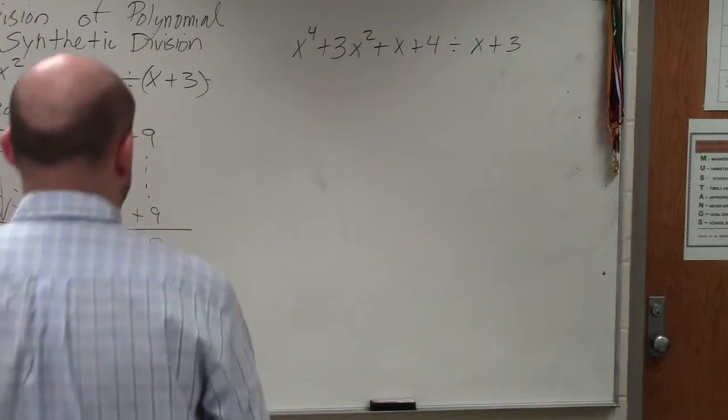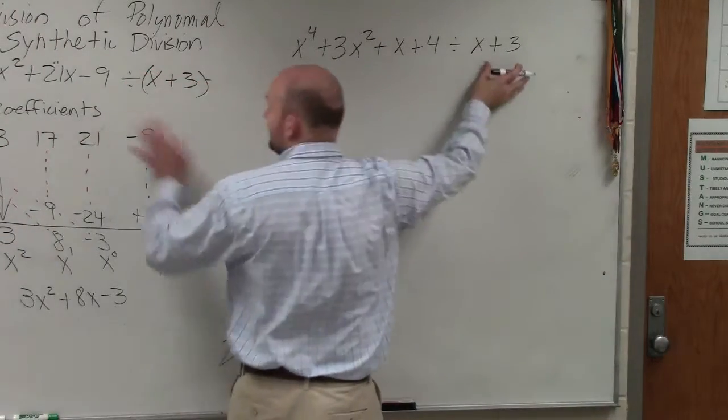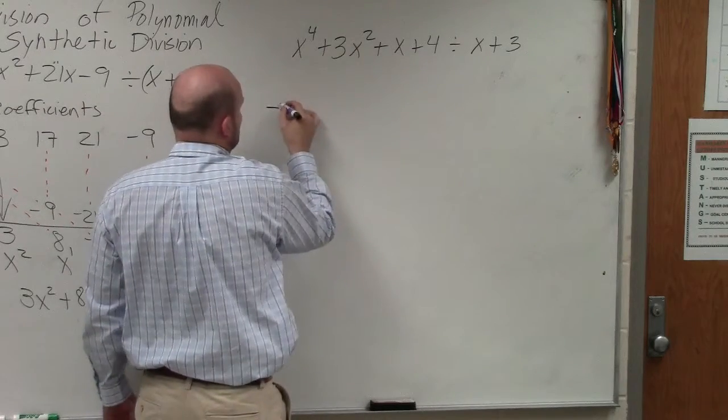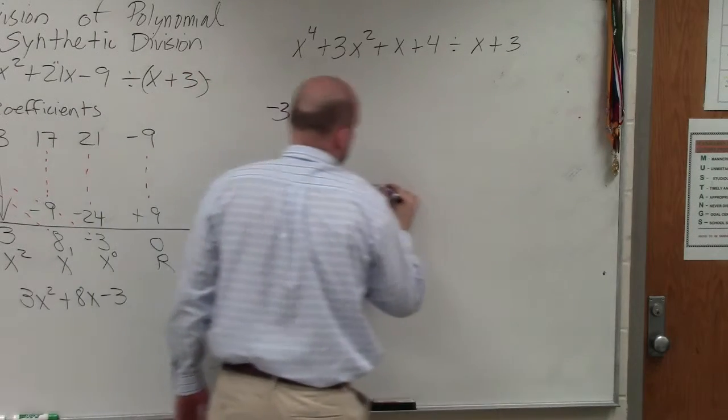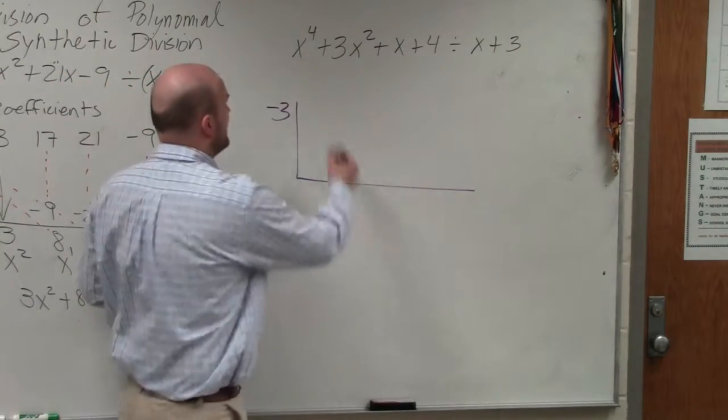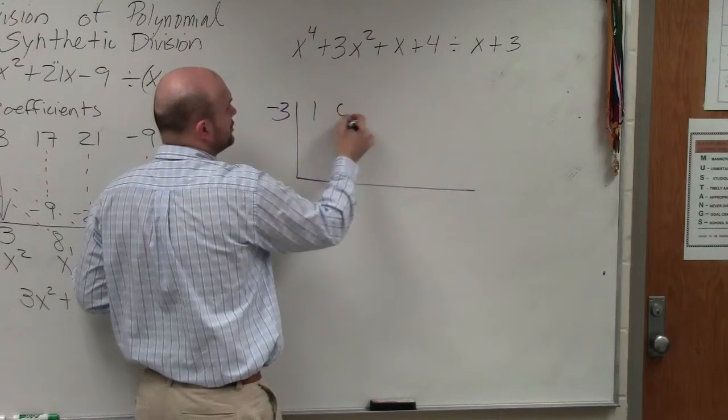First thing is setting up the problem correctly. First thing I'm going to do, I'm not going to actually set it equal to 0, because if I set it equal to 0, my 0 is going to be negative 3. Then I take the coefficients of all my terms, make sure this is in the descending order. I do not have an x cubed, so I need to include a 0.